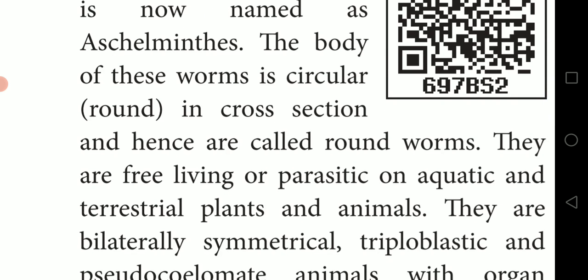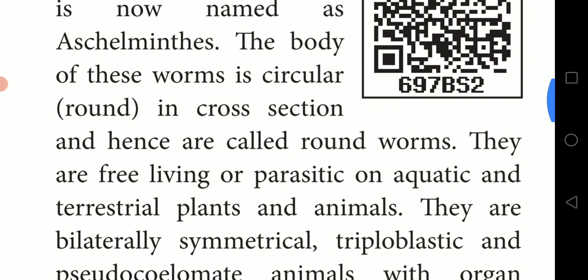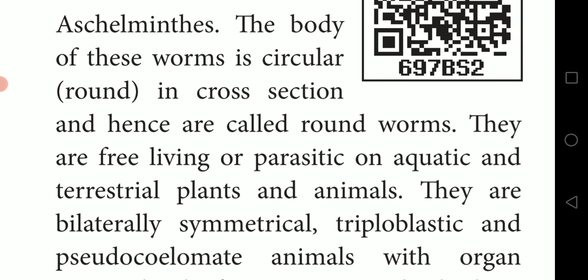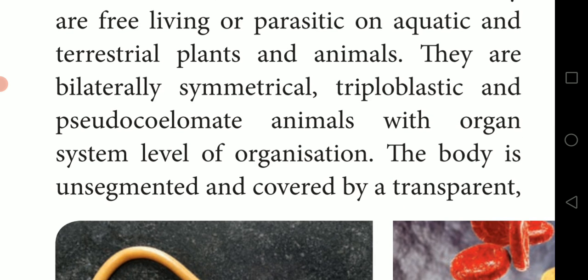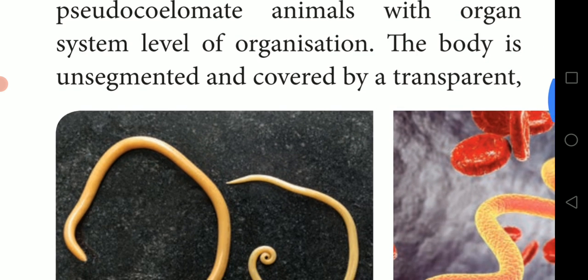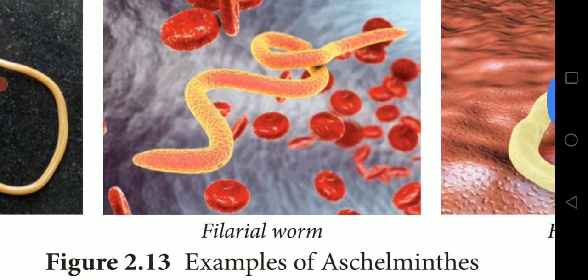Aschelminthes are free living or parasitic on aquatic and terrestrial plants and animals. They are bilaterally symmetrical, triploblastic, and pseudocoelomate animals with organ system level of organization. The body is unsegmented and covered by a transparent layer.